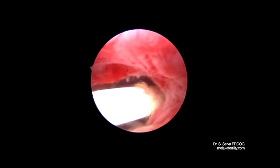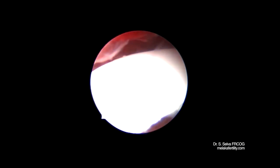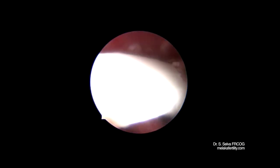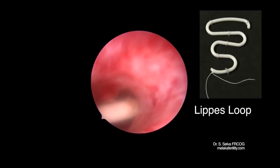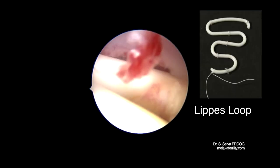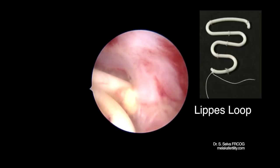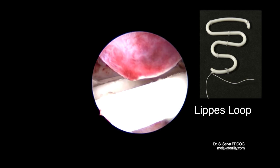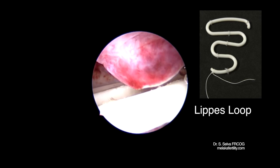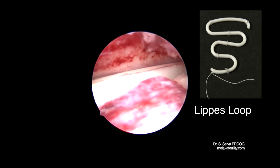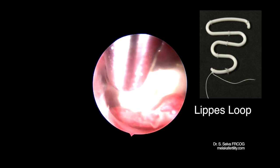This is another case of a missing intrauterine contraceptive device. This IUCD was a lipid loop as shown in the diagram. It was held and removed with difficulty.